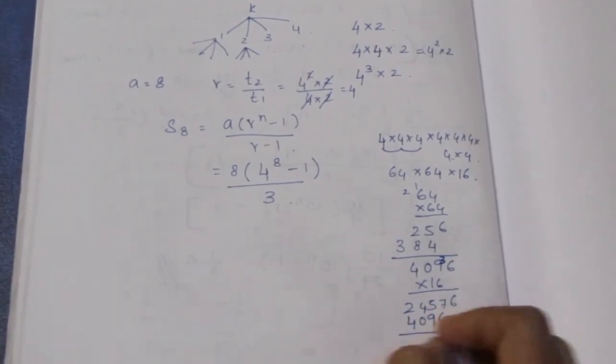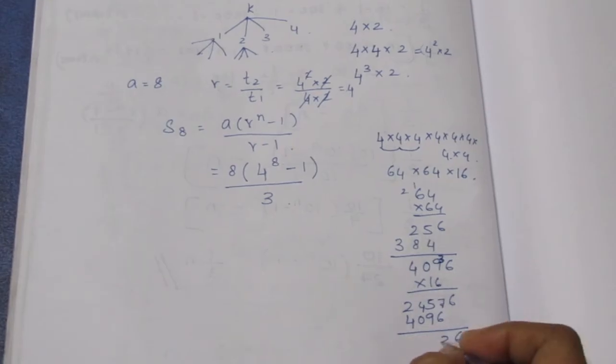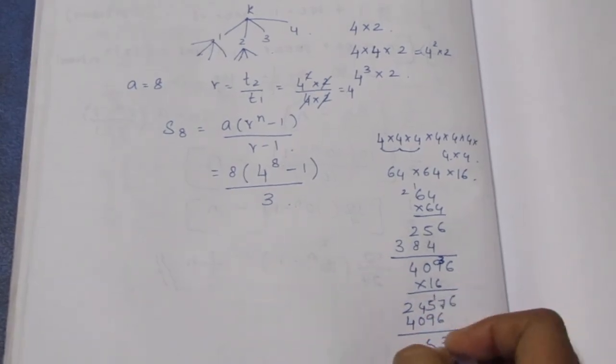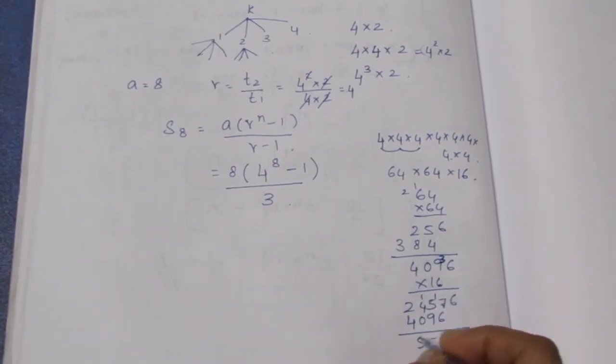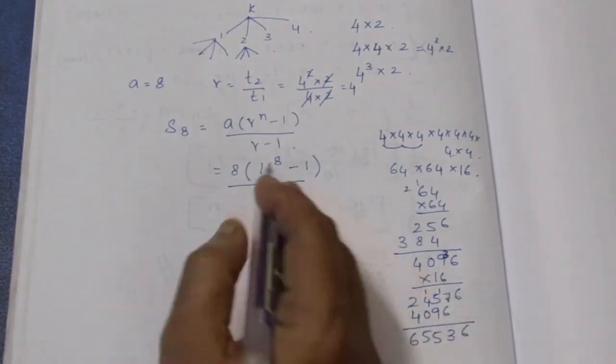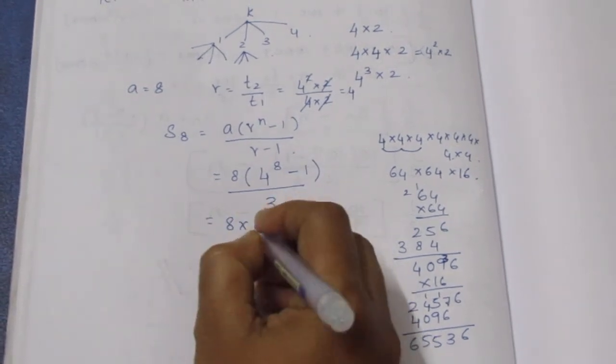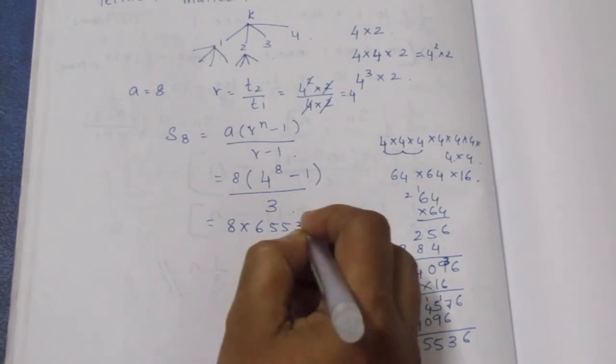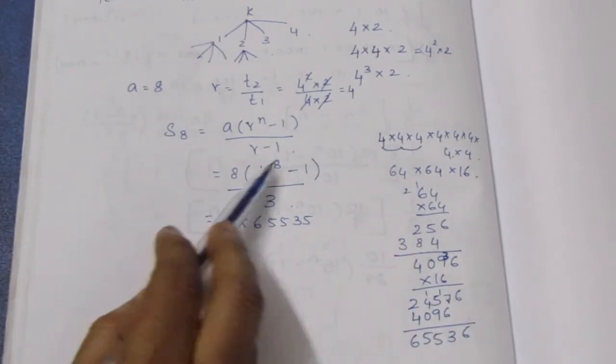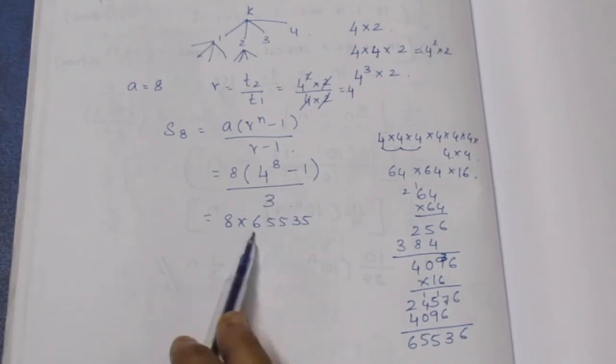Multiply: 0 plus 5 is 5, 5 into 5 is 0 plus 5 is 5 and 6. 4, 0, 9, 6, 1 multiply 6. 12, 13, 15, 5. 6, 6, 5, 5, 3, 6 minus 1 is 8 into 6, 5, 5, 3, 5.